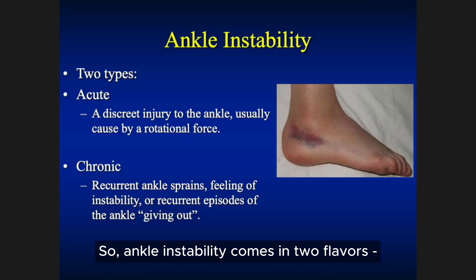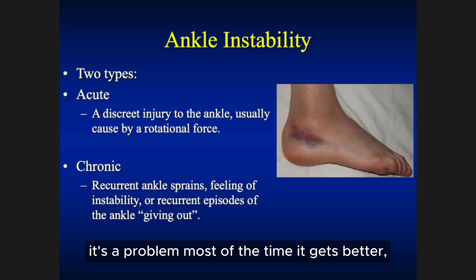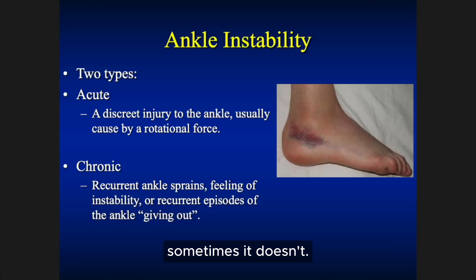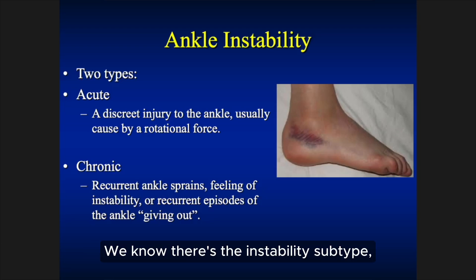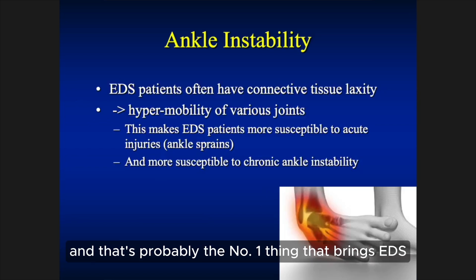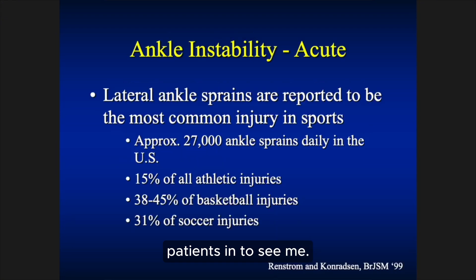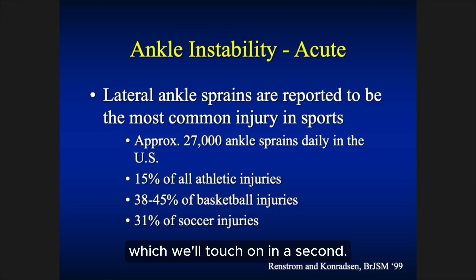Ankle instability comes in two flavors: acute and chronic. Acute is — ouch, I sprained my ankle, it hurts for a while, most of the time it gets better, sometimes it doesn't. Then we have chronic ankle instability. The vast majority of my EDS patients fall into the chronic instability group. We know there's the instability subtype, and most of these patients develop joint laxity and instability over time. That's probably the number one thing that brings EDS patients in to see me, and it really tends to be lateral ligament instability.